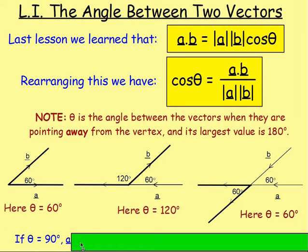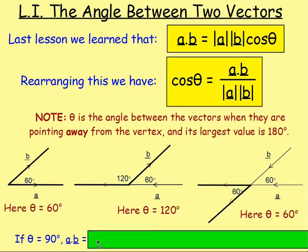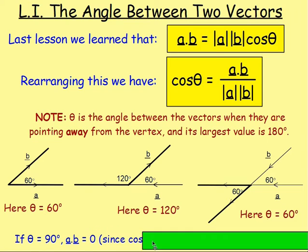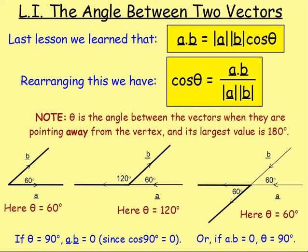Another note: if θ is 90 degrees, a·b is equal to zero, since the cos of 90 is zero. Or, another way of saying that: if a·b equals zero, then θ, the size of the angle, will be 90 degrees.